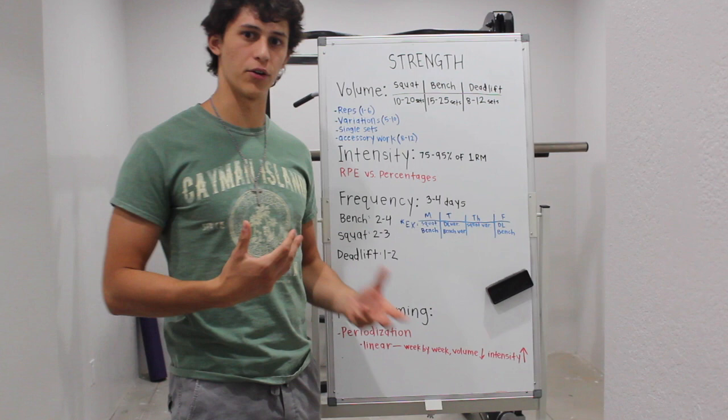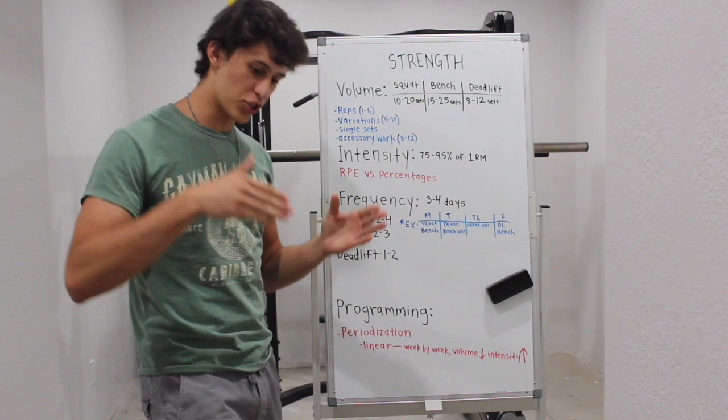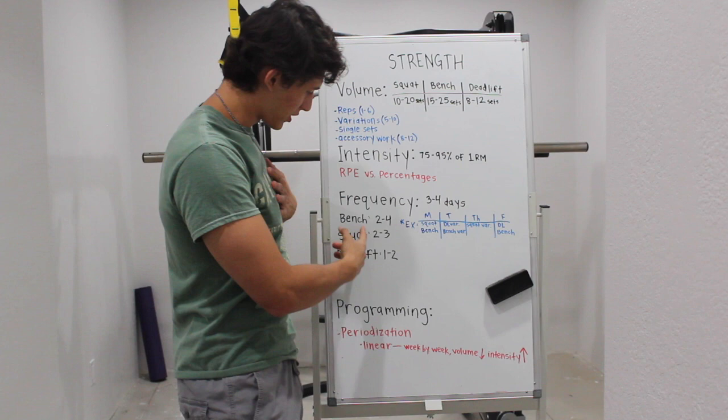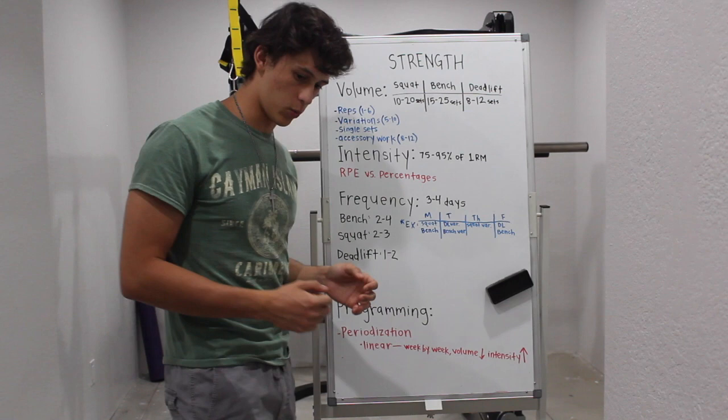Now jumping into frequency. With just a pure raw strength program, you're going to want to perform that three to four times a week. You'll be benching around two to four times a week, squatting two to three times a week, and deadlifting once or twice a week.